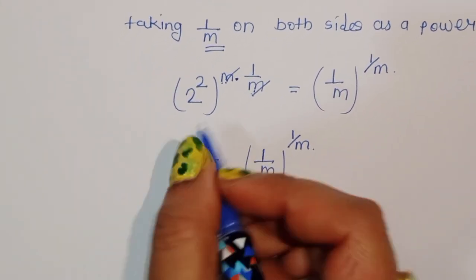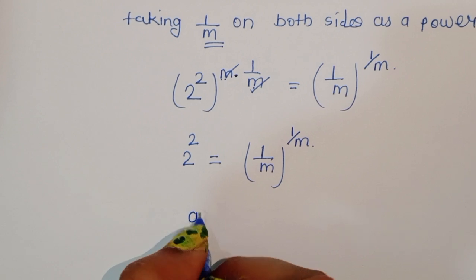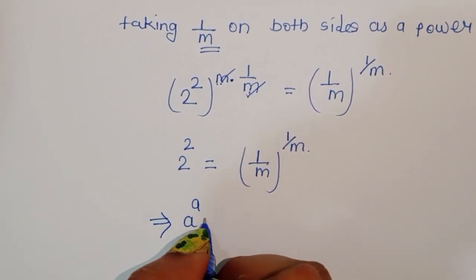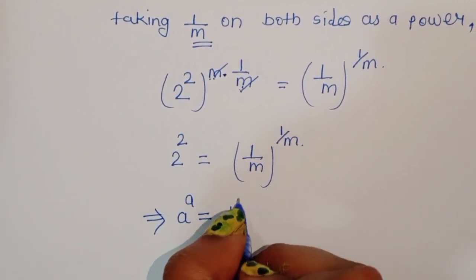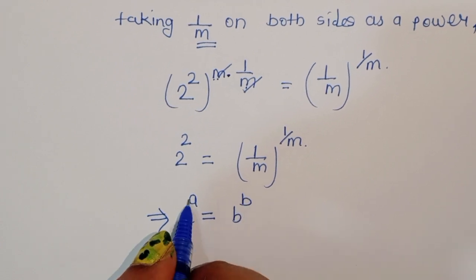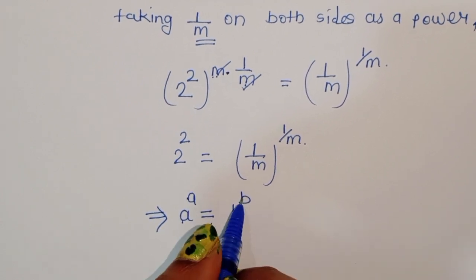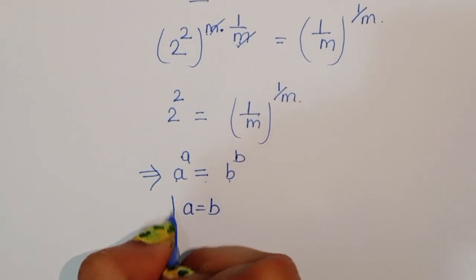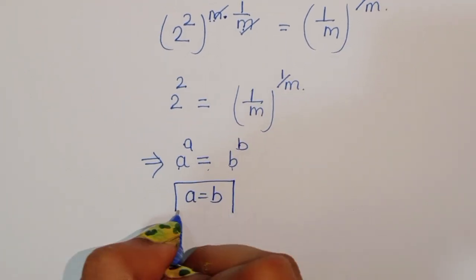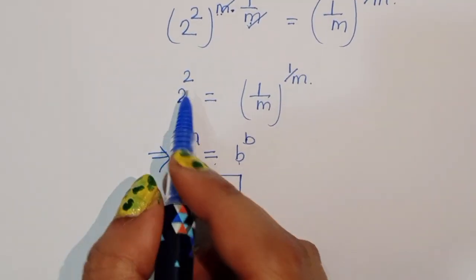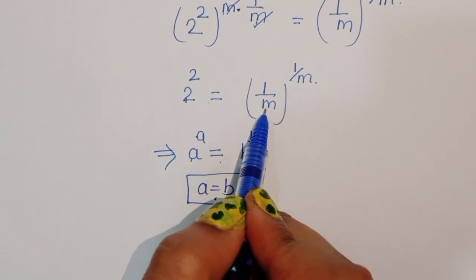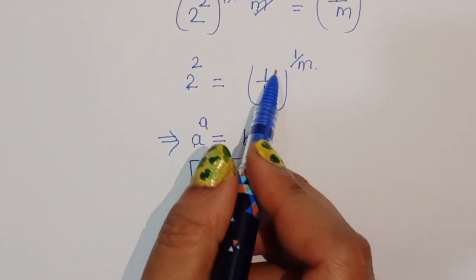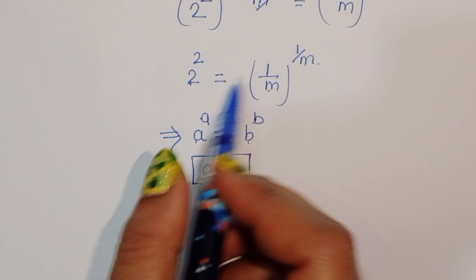Now, here we know the formula: A power A is equal to B power B. If A power A is equal to B power B, then we can say A is equal to B. This is the formula. Using this formula here, A power A equals B power B means the base and power are the same on both the LHS and RHS.